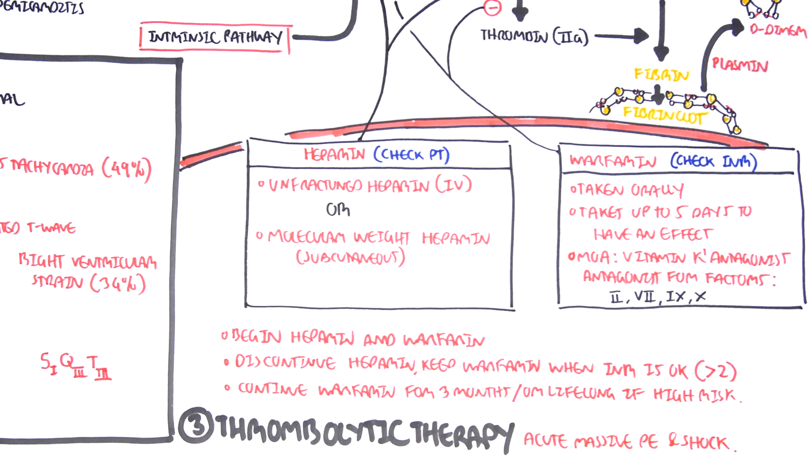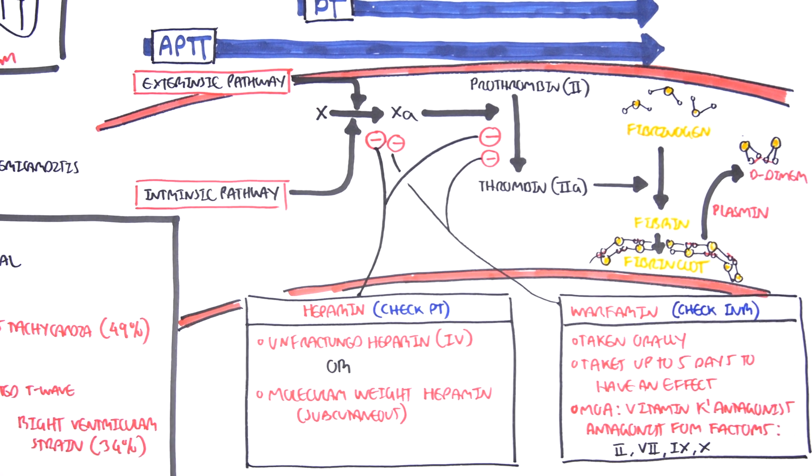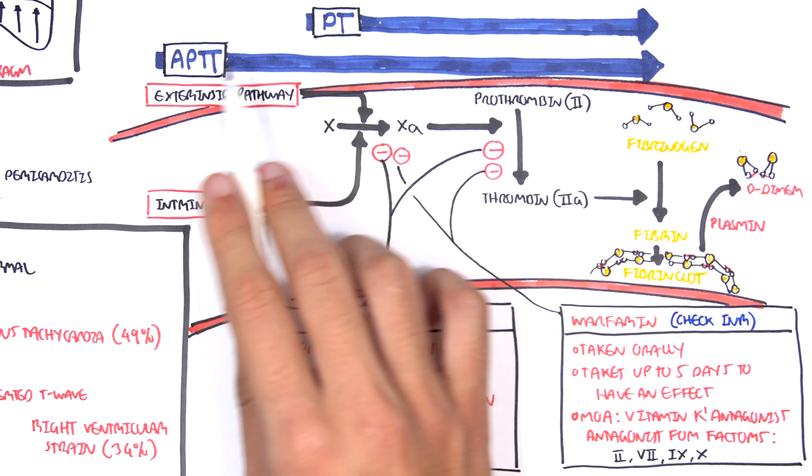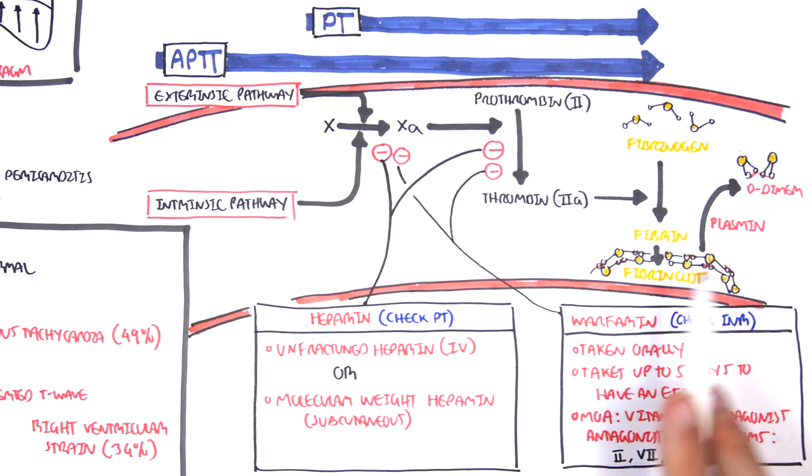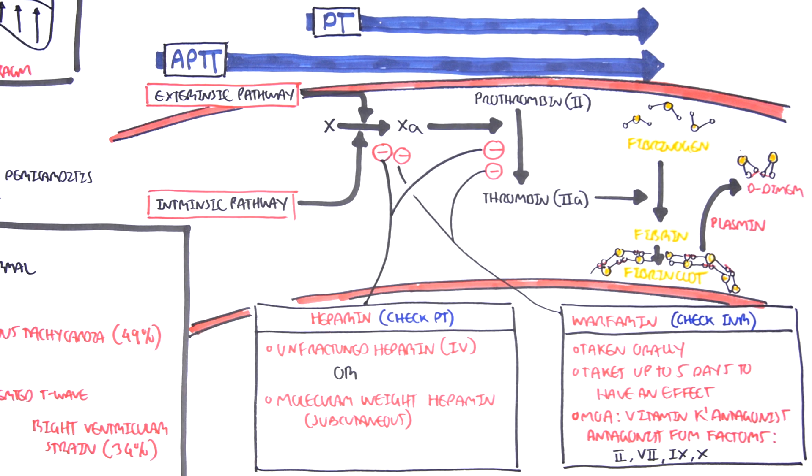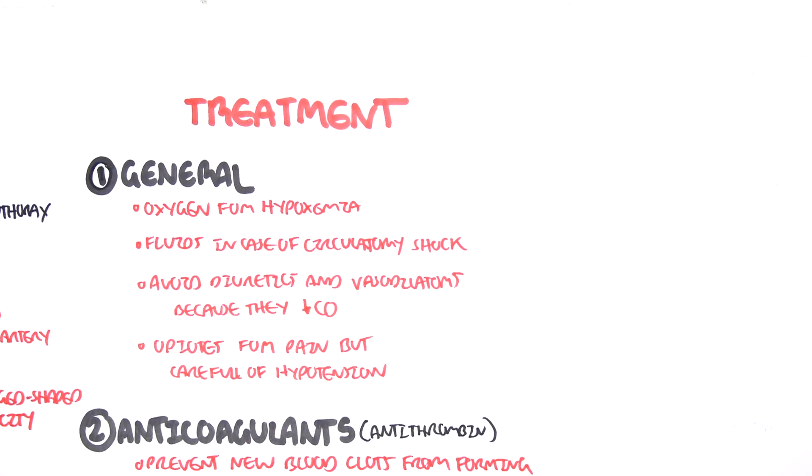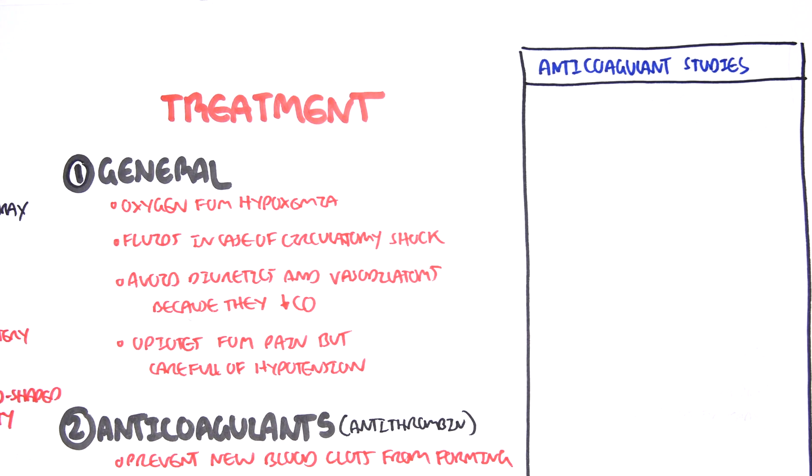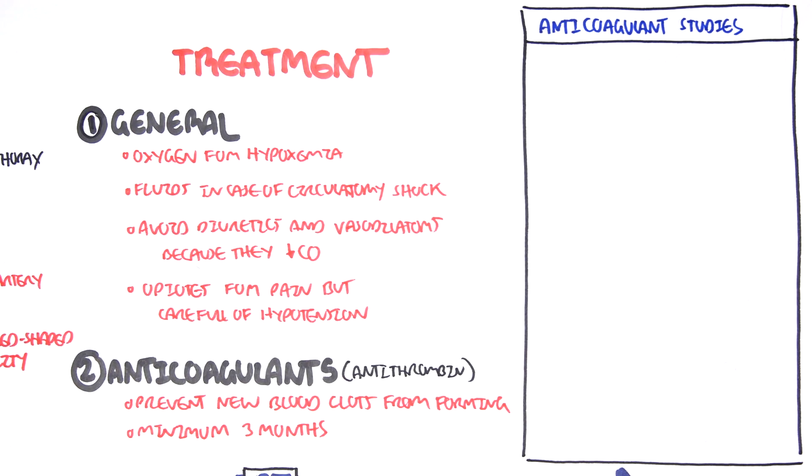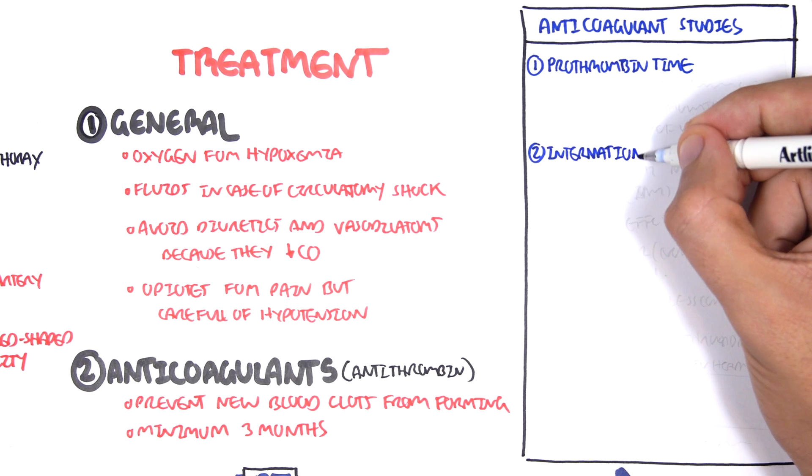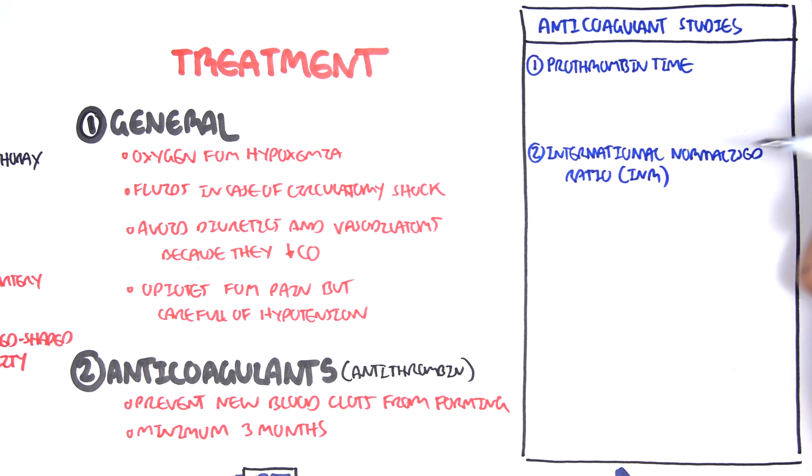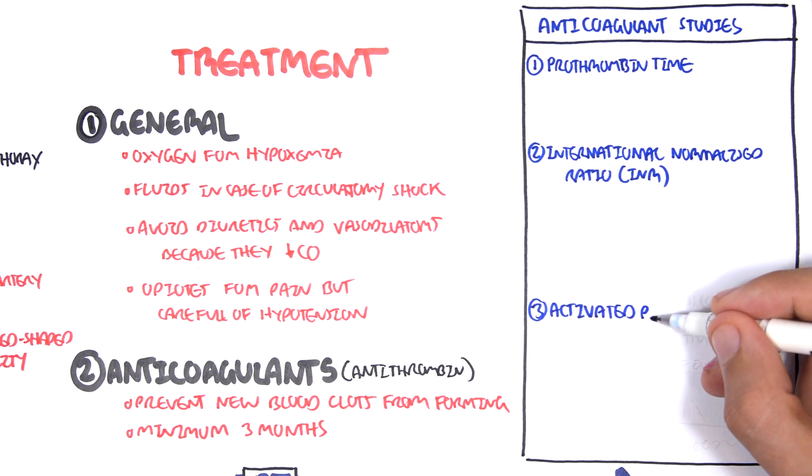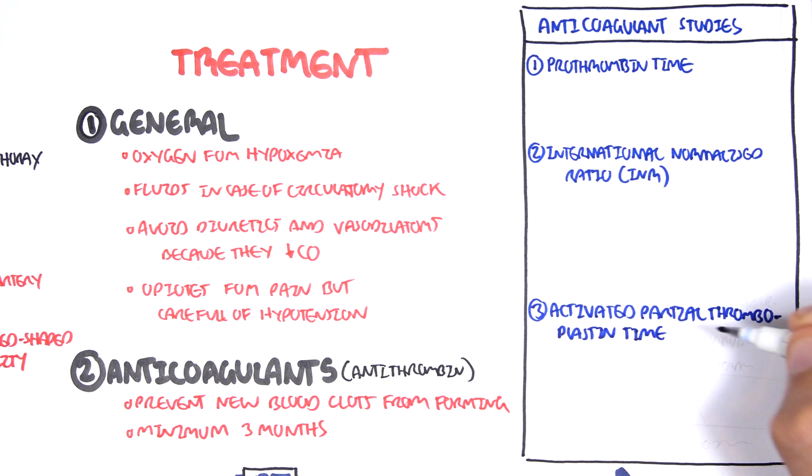Going back to the blood tests we can use to check for coagulation activity in the blood, we talked about D-dimers, we talked about INR, we talked about PT and APTT. So now let's look at these anticoagulant studies in more detail. I will talk about 4 main ones here: prothrombin time, the international normalized ratio INR, the activated partial thromboplastin time APTT, and the bleeding time.